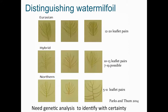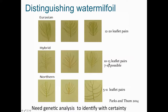It's difficult to distinguish these water milfoil taxa. Looking at leaflets or pinnae: Eurasian water milfoil has closely spaced pinnae, typically 12 to 20 leaflet pairs. Northern water milfoil has much more widely spaced pinnae, typically 5 to 11 leaflet pairs. Hybrid is intermediate, typically 10 to 13 leaflet pairs, but ranges from 7 to 19 — so there's incredible overlap. You really can't tell which species you have without genetic analysis, which we've been using based on microsatellites.